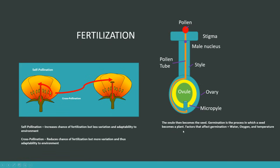The main factors that affect germination are water, oxygen, and temperature — three things you need to be aware of.